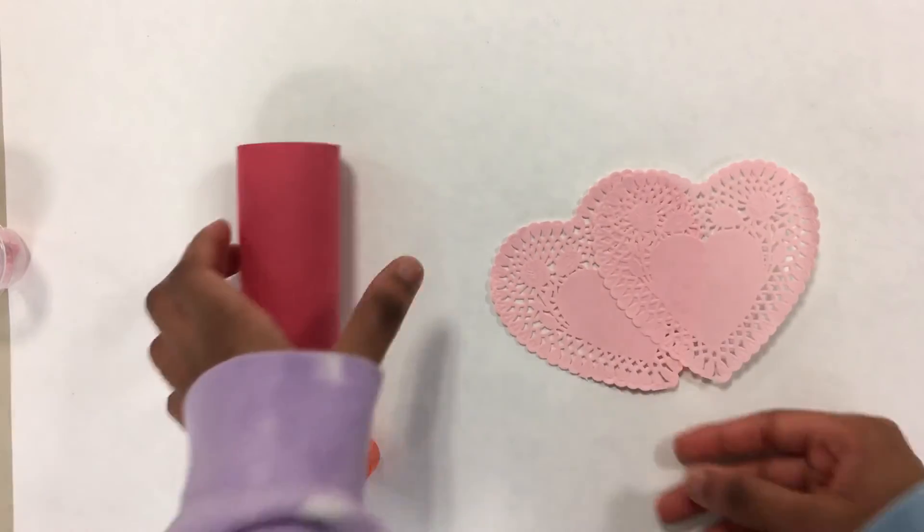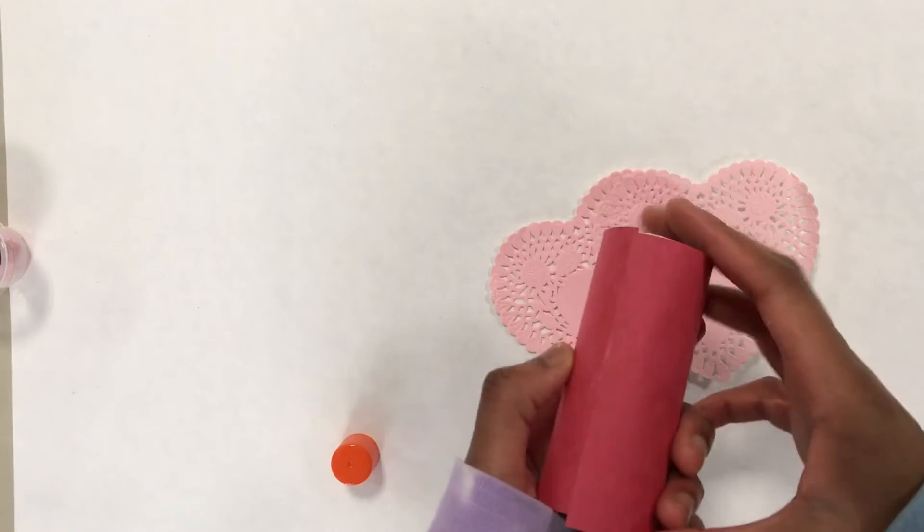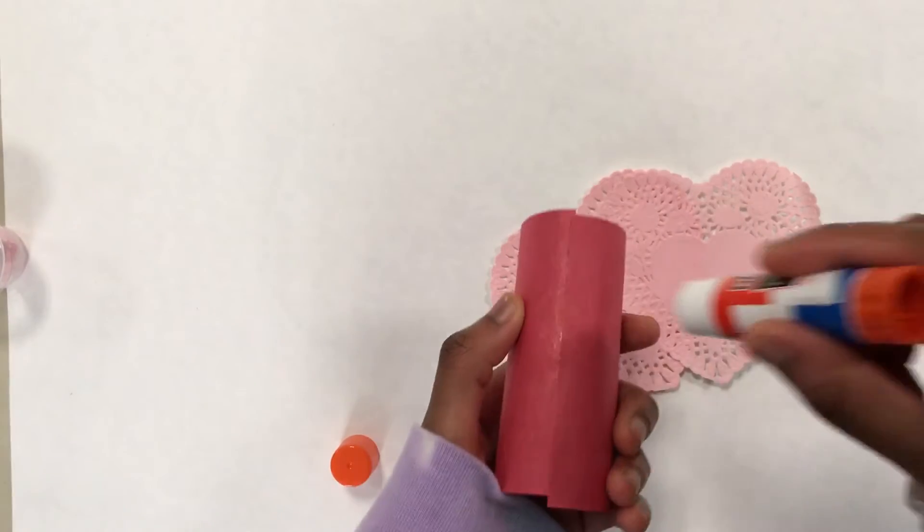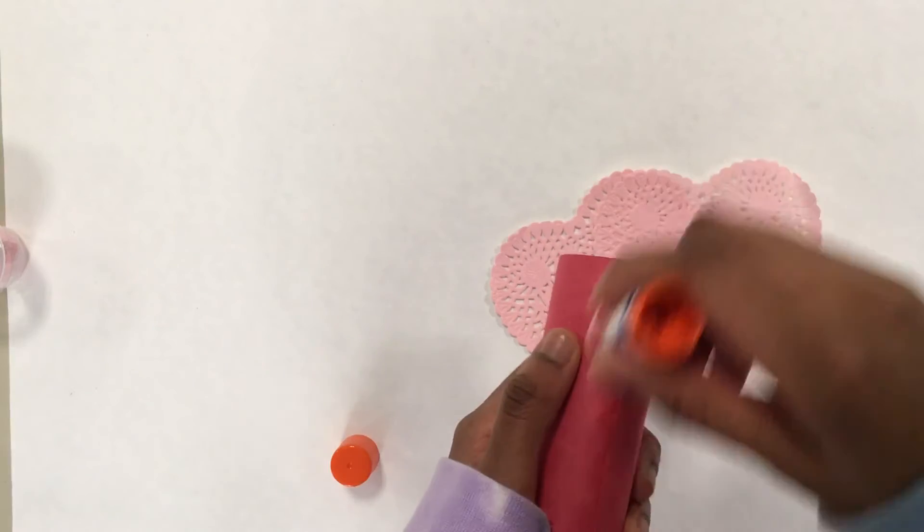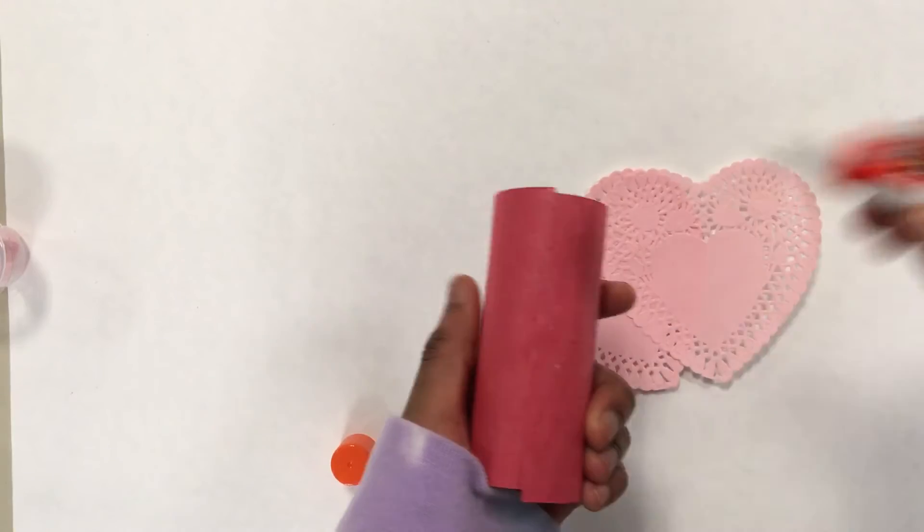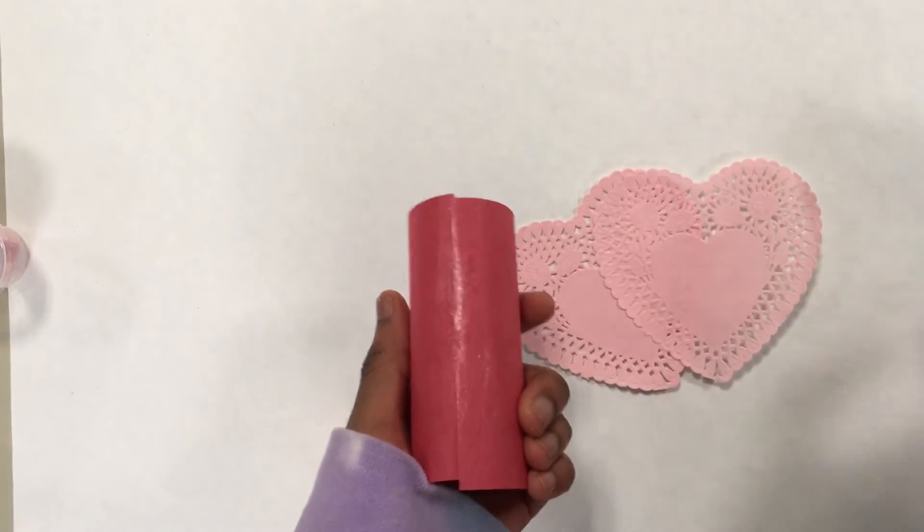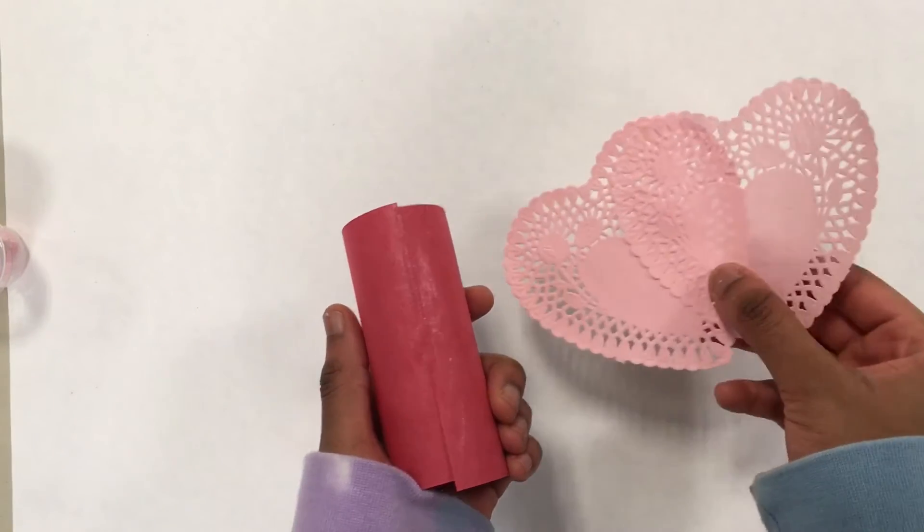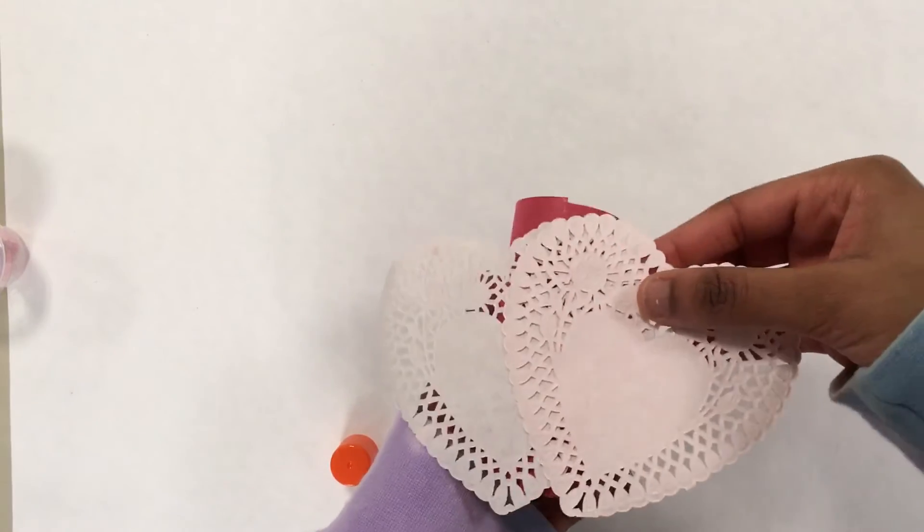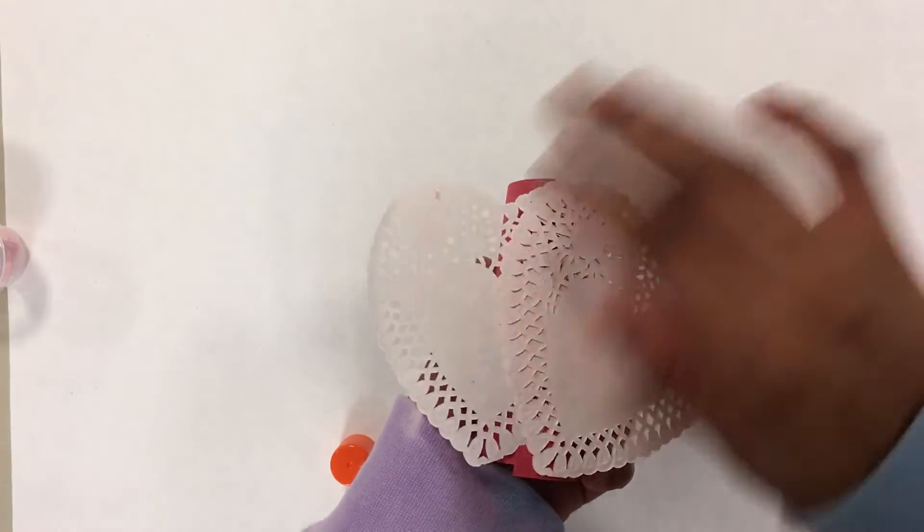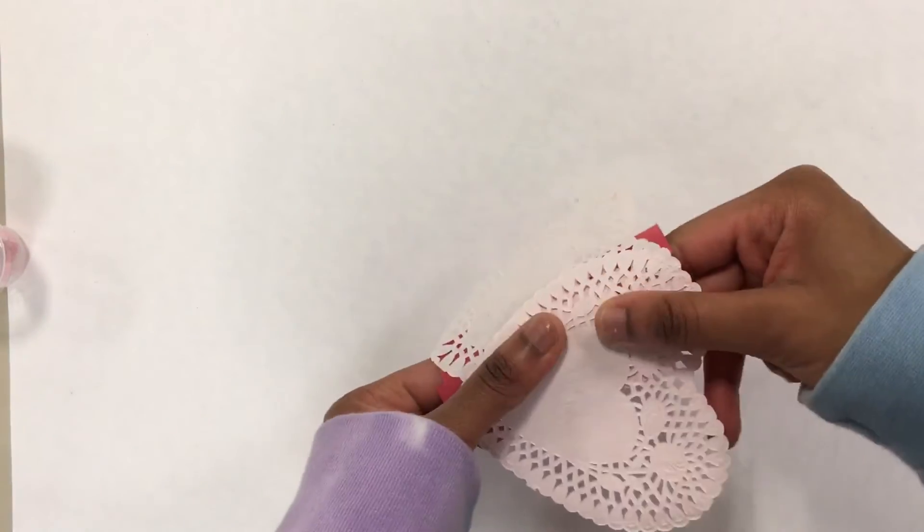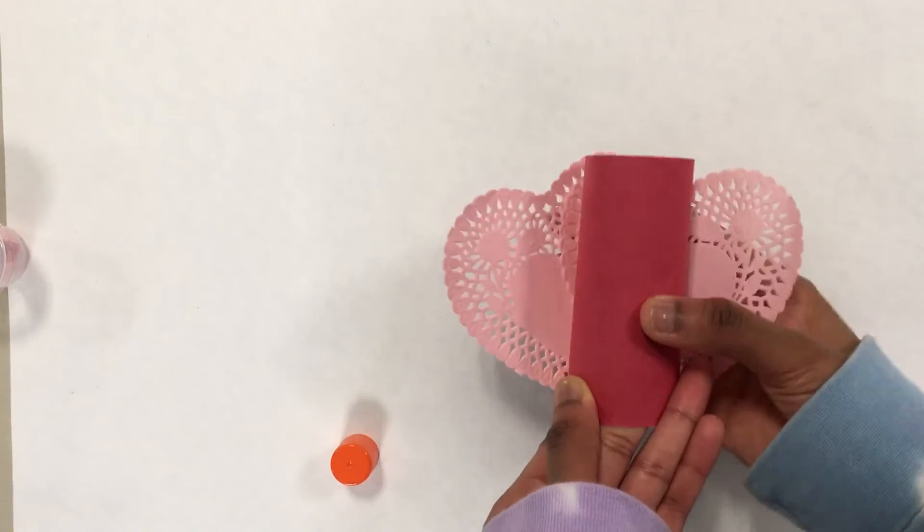Okay, and there you go. There's your red card. Now you turn it to the back where you can see the lines.